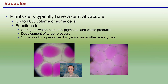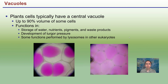Looking at a plant cell, that one central vacuole can be up to 90% of the volume of the cell, as we can see here. They function in water storage, nutrients, pigments, and waste products, as well as the development of turgor pressure. Some functions are also performed by lysosomes in other eukaryotes.